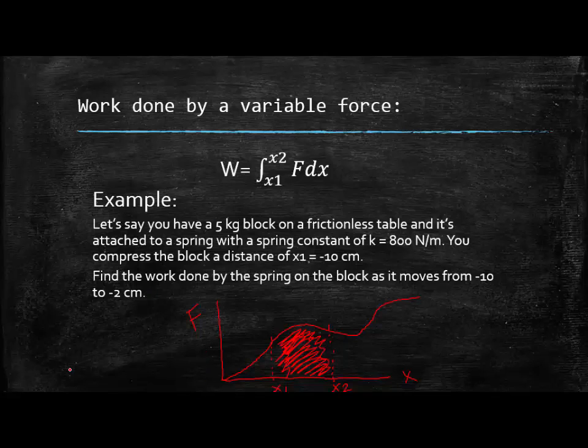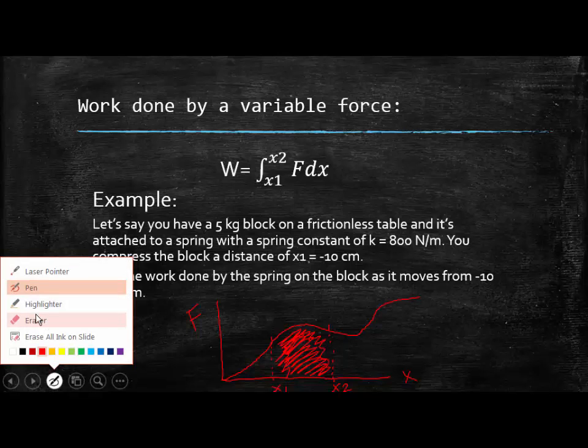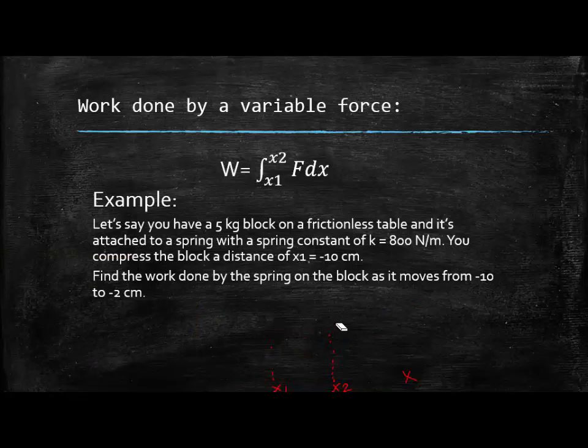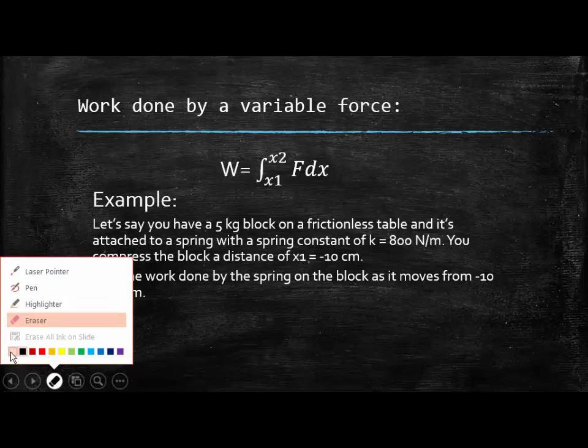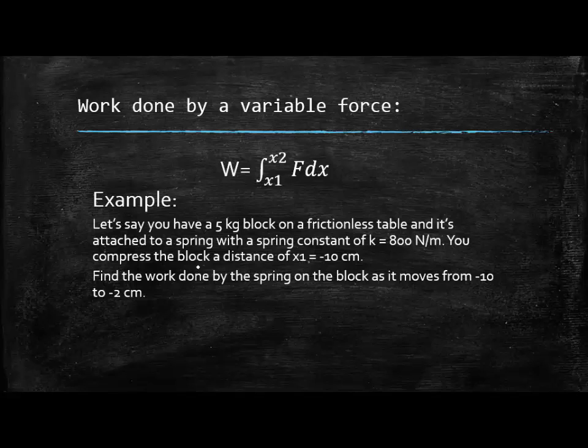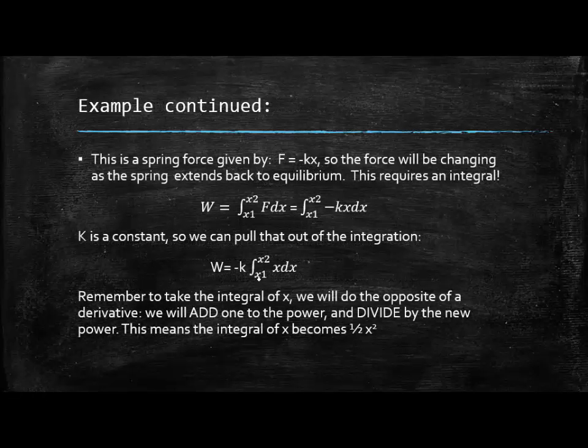So let's take a look, because the easiest way just to try integration is just to try it and do it. So on this example, it's a spring force. Let's say you have a five kilogram block on a frictionless table and it is attached to a spring. And that spring has a spring constant of 800. So I'm going to compress the block a distance of negative ten centimeters. And I want to find the work done by the spring on the block as it moves from negative ten to negative two.